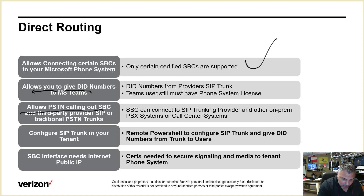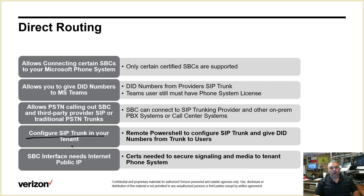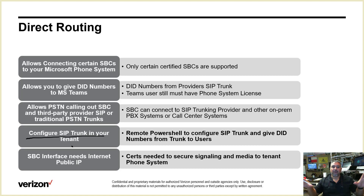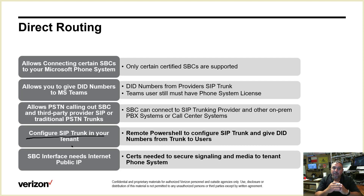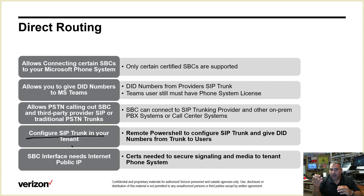This also allows PSTN calling out through the SBC to PSTN trunks. To configure the SIP trunk, you remote PowerShell into your tenant. Remember, Office 365 is multi-tenant — your tenant is your slice of the pie in the cloud. You bring up PowerShell, remote into your tenant, and apply commandlets. You load up a Skype for Business module and start configuring — specifically a SIP trunk with IP address and FQDN.